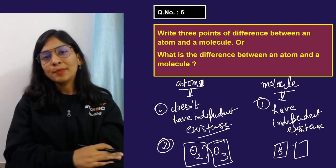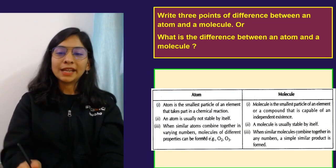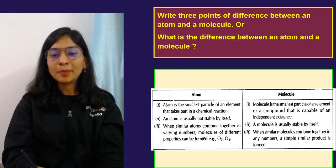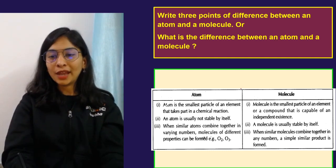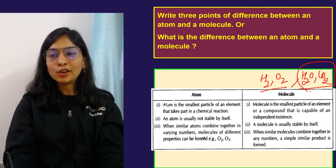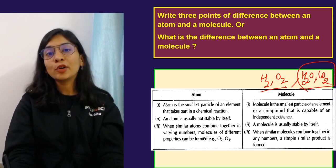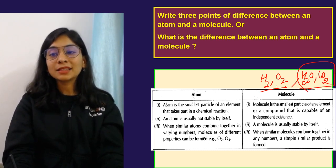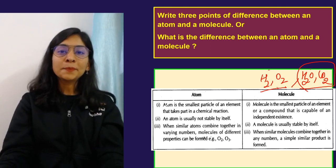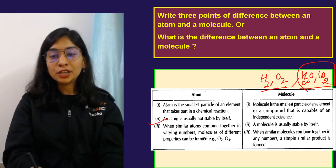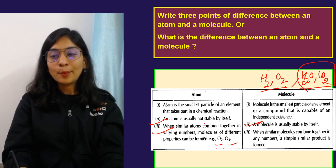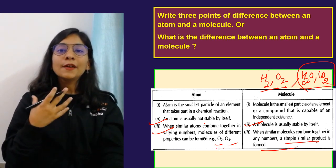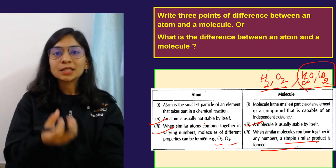When atoms of the same element combine, you can get different molecules depending on the ratio. A molecule is the smallest particle of an element or compound. Examples: H₂ and O₂ are molecules of elements; H₂O and CO₂ are molecules of compounds. Atoms are generally not stable by themselves; molecules are stable. Atoms combine to give molecules of different properties, while molecules combine to give the same element or a compound.